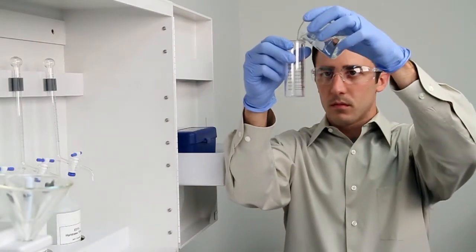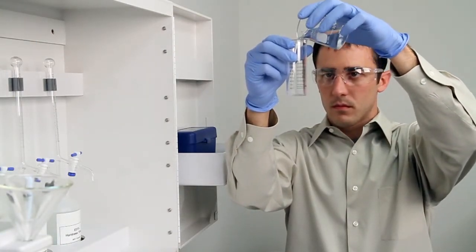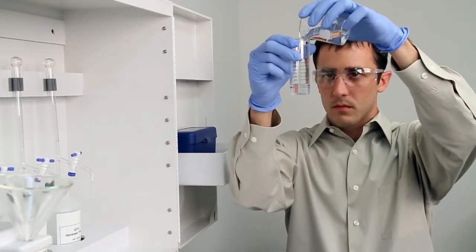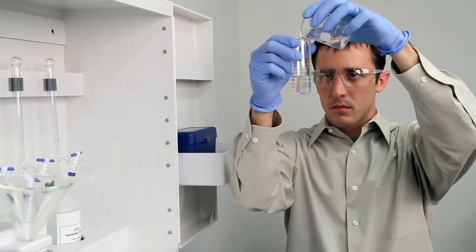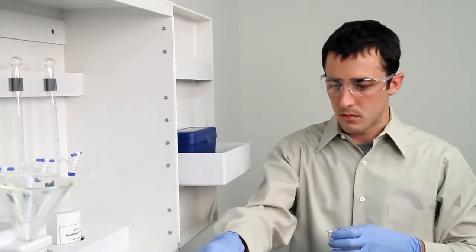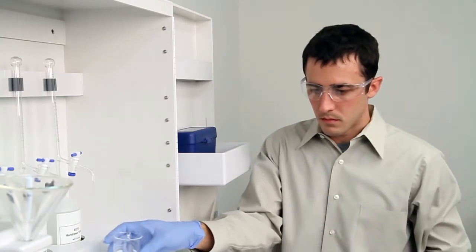To get an accurate sample, hold the vial close to eye level. Accuracy is very important during this step. Once you feel you have an accurate sample, place the vial on a level surface and bend down to eye level to verify.